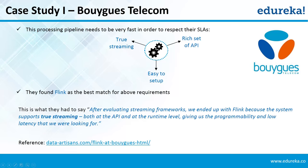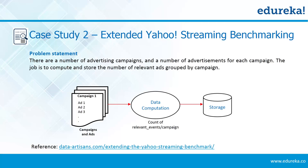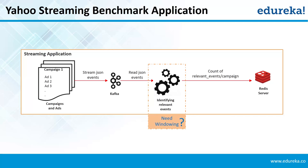Now we come to Case Study 2: the Extended Yahoo Streaming Benchmark, an extension to the Yahoo Benchmark Streaming. The problem statement is that there are a number of advertising campaigns and advertisements for each campaign, and the job is to compute and store the number of relevant ad events grouped by campaign. The benchmark application reads various JSON events from Kafka, identifies the relevant events, and stores a windowed count of relevant events per campaign into Redis. To identify relevant events per campaign, aggregation on the infinite input stream from Kafka required windowing.